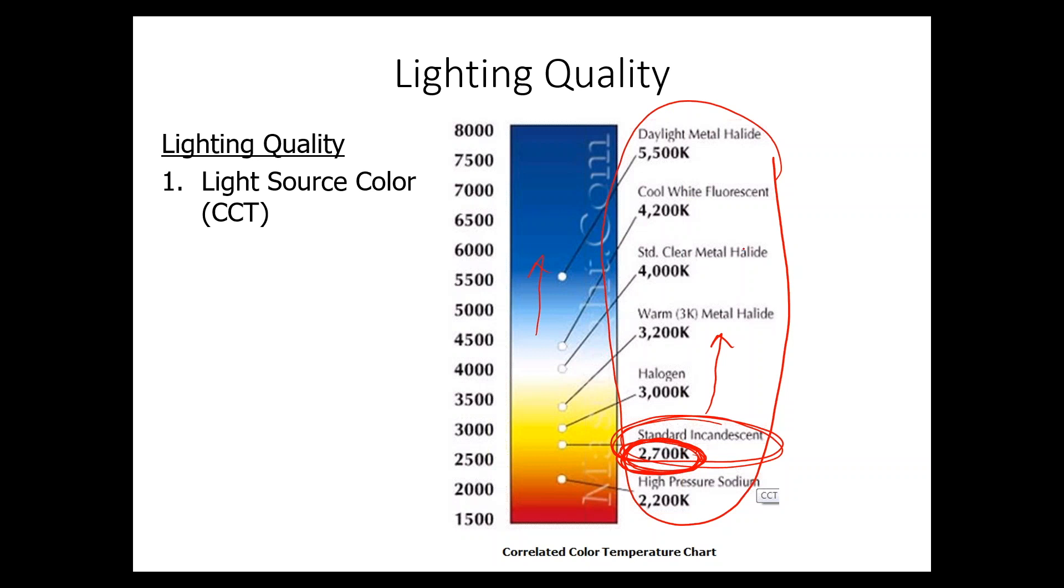And we often call that cool white. Cool white would be about 4100 Kelvin, somewhere in here. And we call that cool white. Although, technically, it's actually a warmer temperature than standard incandescent lamp color. So, this is important because it establishes the ambiance of an environment. And I'll give you an example in a few minutes.